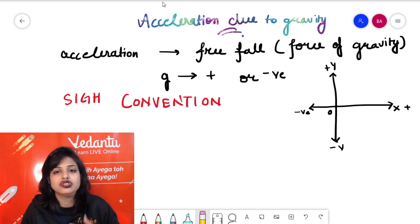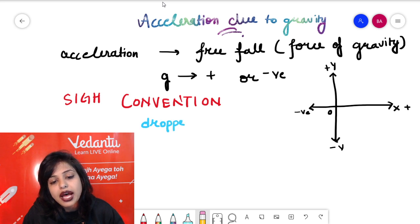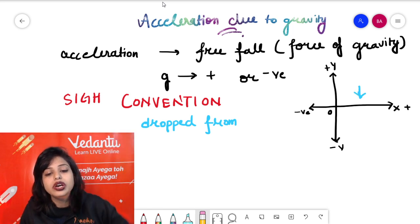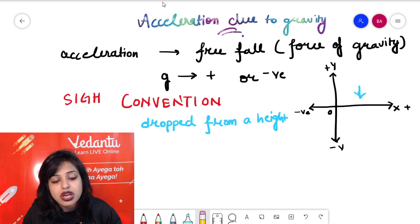Now talking about general cases, when a body is dropped from a height, it is coming downward, towards the negative y side. As the force of gravity is also downward, when a body is dropped from a height, the g should be taken as positive.